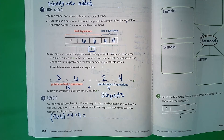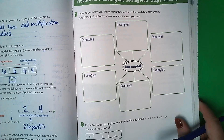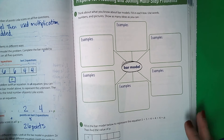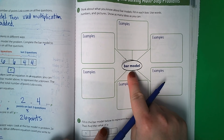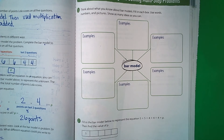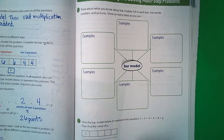Go ahead and turn to page 195. On page 195 we see a graphic organizer to talk about bar models. A bar model is a way to draw a picture of what we're doing when solving word problems like the one we just did. I highly recommend always using a bar model to help you solve those problems, because if you do, you're going to get it right.